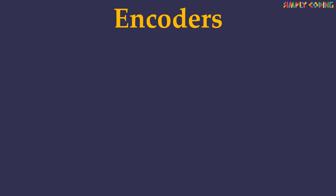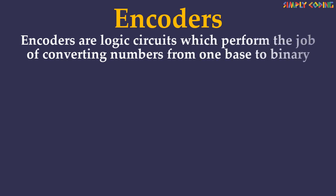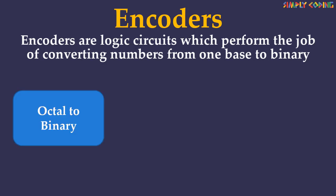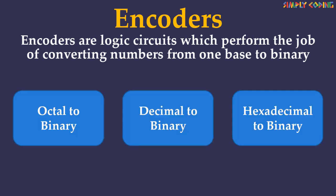Now let's take a look at encoders. Encoders are logic circuits which perform the job of converting numbers from one base to binary, like octal to binary, decimal to binary, or hexadecimal to binary. Let's look at each one of them.